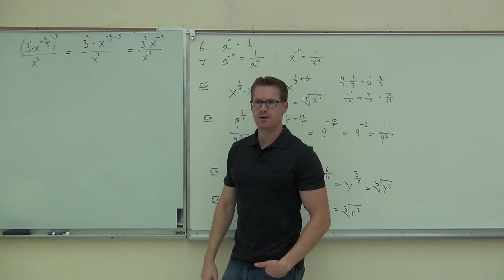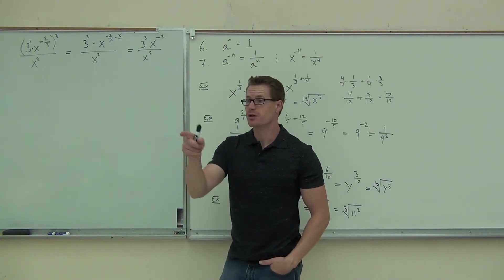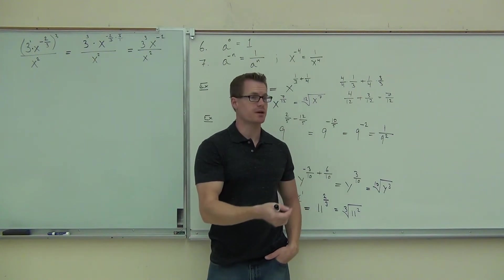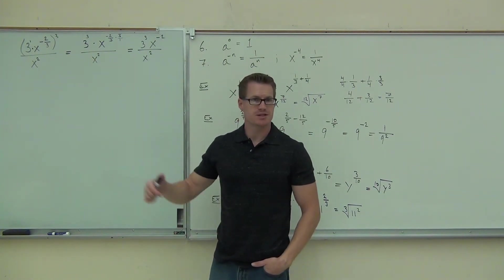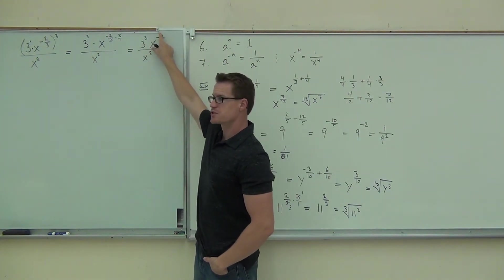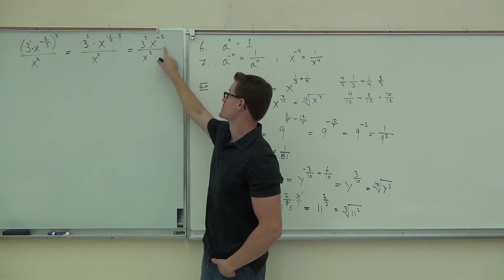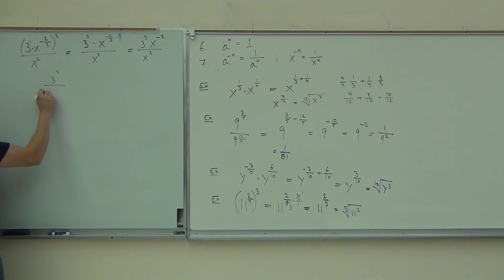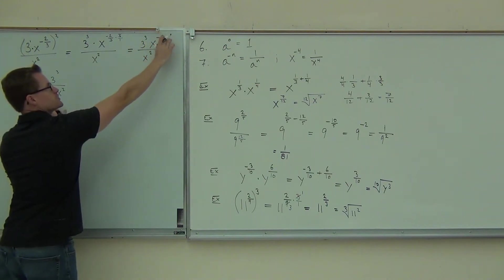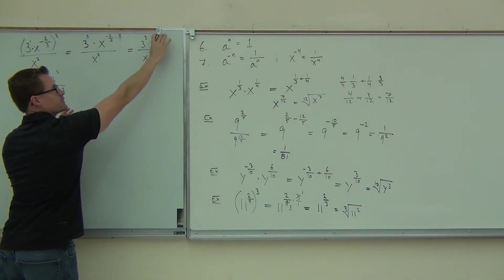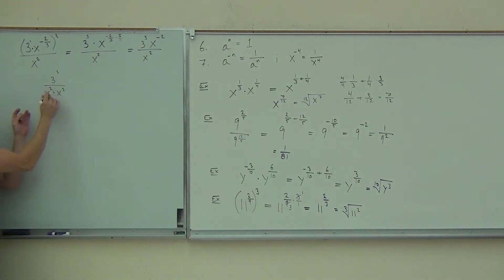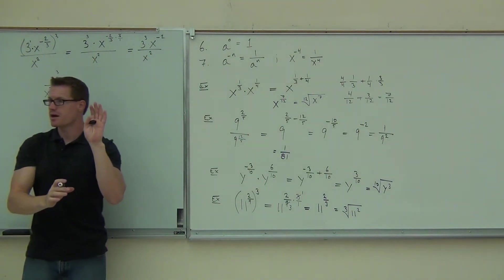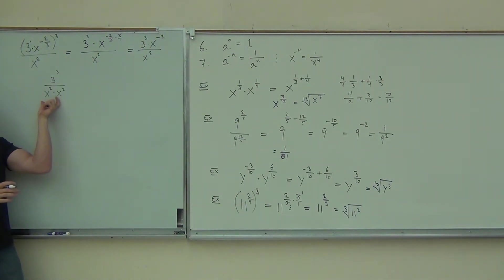There are actually options here. Since that's a negative exponent, you could move this to the denominator of the fraction. What you would get is three cubed over x squared times x squared — that x squared is from this one moving to the bottom. Remember, it's still multiplied; it becomes a positive x to the first. Then you can combine those: that's going to be x to the fourth.